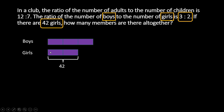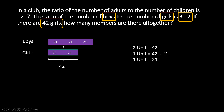Once we know that these are equal sized units of the same size — they are equal sized units — if these 2 units are 42, then what will be the value of one unit? So 2 units are equal to 42, so one unit will be 42 divided by 2, which gives us 21. So each of these units will also be 21 because they are of the same size.